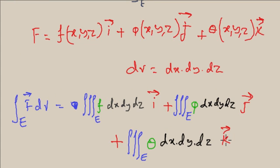So F dv can be written as triple integration of f dx dy dz i, plus triple integration φ dx dy dz j, plus triple integration θ dx dy dz k. That means it is a triple integral, and you are required to find out the triple integration three times.